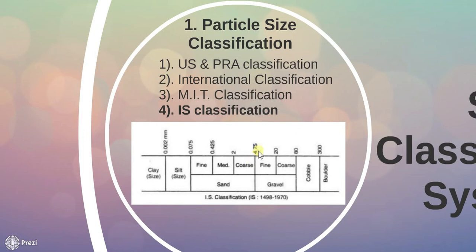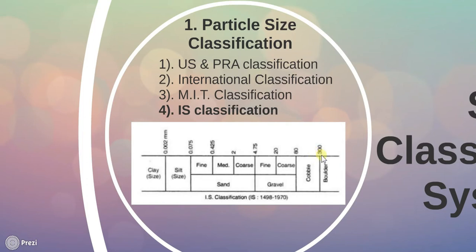Same way, if particle size lies in between 4.75 to 80 mm then they are called gravel. If 4.75 to 20 mm it is fine gravel, and if particle size is between 20 to 80 mm then they are coarse gravel. More than that, if particle size is greater than 80 mm they are cobbles up to 300 mm, and after particle size exceeding 300 mm they will be called boulders. So this is how IS classification is done.